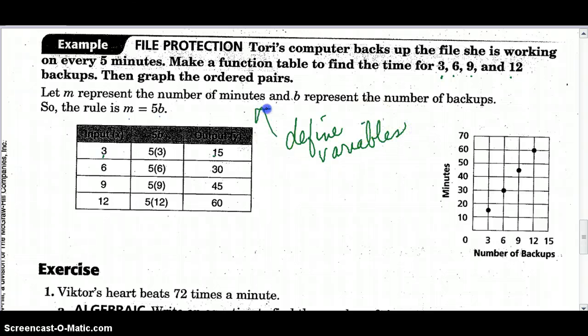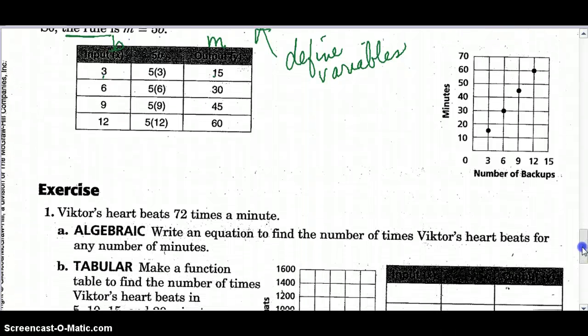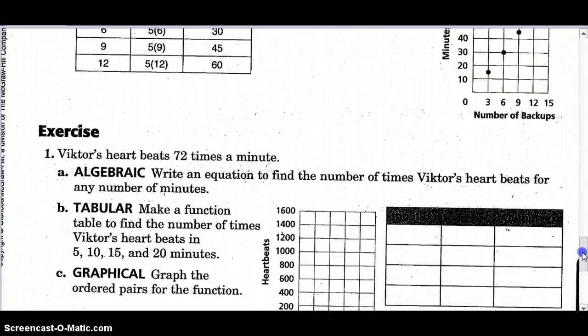The first thing we have to do is define our variables. And that's what they're going to do here. m is going to represent minutes, and b is going to represent backups. So the function rule is m equals 5b. So for every backup, you're multiplying times five minutes. So 3, 6, 9, and 12, those were given to me here. This is my x value or my domain, my input. Maybe I should call that input rather than x. And then, this is how many minutes have passed, and this is how many backups. And then, they've plotted it on a graph so that you can see the progression.